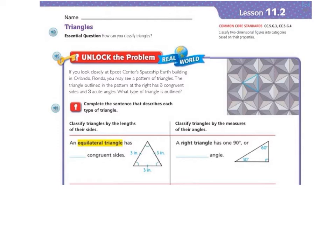Let's look at the Unlock the Problem. It says, if you look closely at Epcot Center's Spaceship Earth Building in Orlando, Florida, you may see a pattern of triangles. The triangle outlined in the pattern at the right has three congruent sides and three acute angles. What type of triangle is outlined?